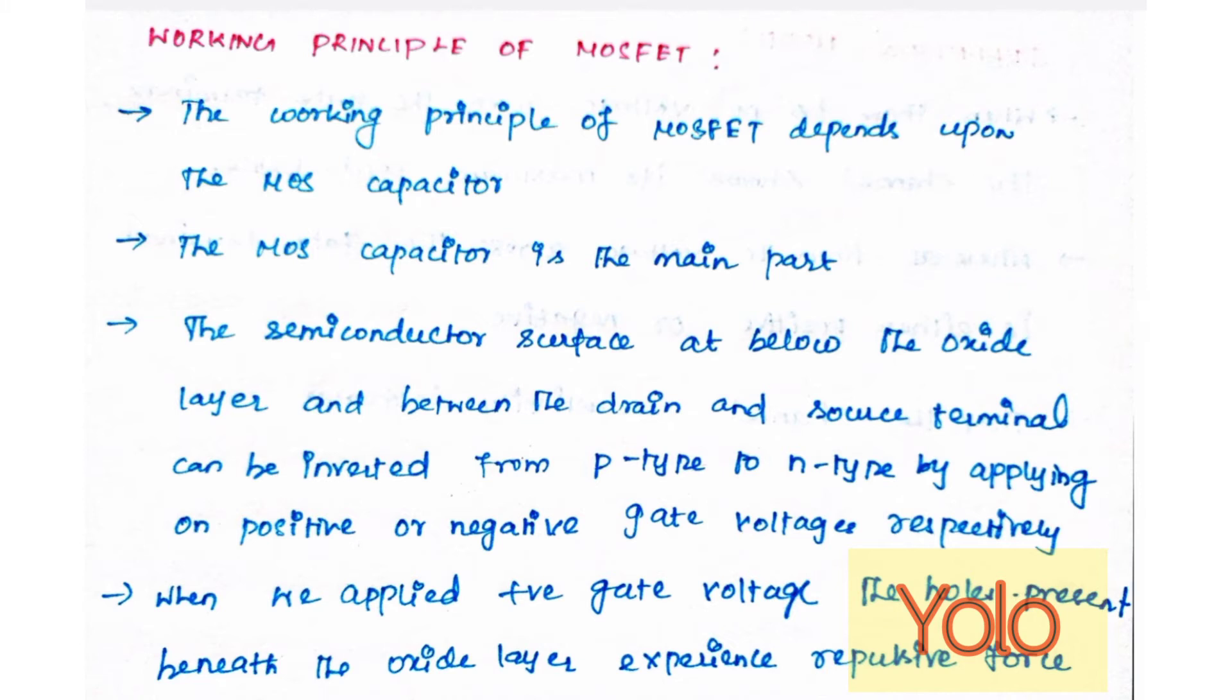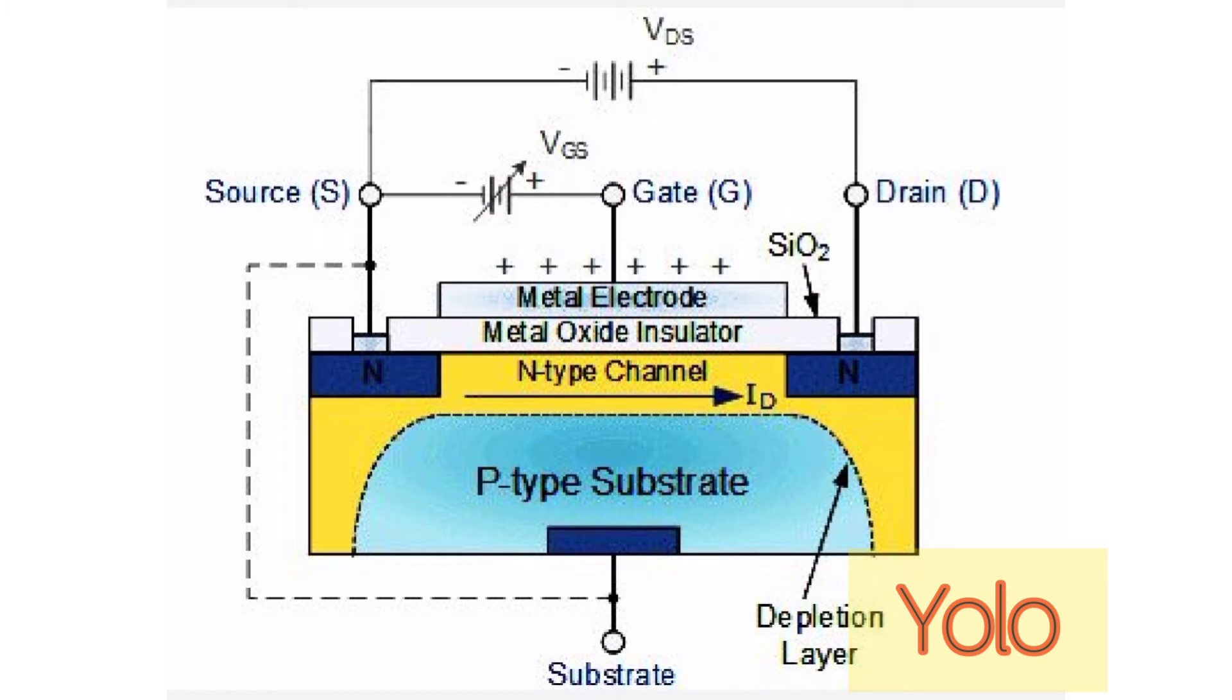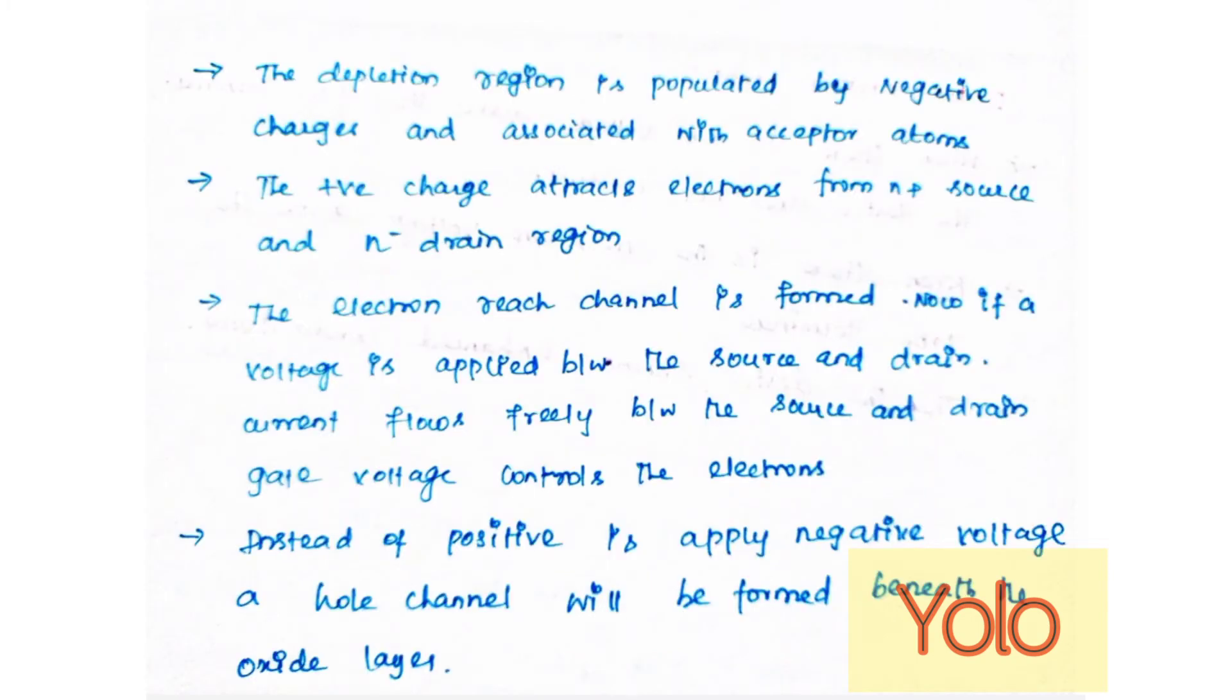Working principle of MOSFET: The working principle of MOSFET depends on the MOS capacitor. The MOS capacitor is the main part of MOSFET. The semiconductor surface below the oxide layer and between the drain and source terminal can be inverted from p-type to n-type by applying positive or negative gate voltages respectively. When we apply positive gate voltage, the holes present beneath the oxide layer experience repulsive force and the holes are pushed downward with the substrate. The depletion region is populated by the bound negative charges.